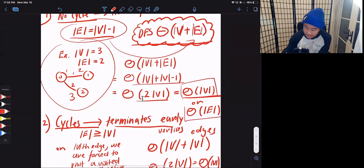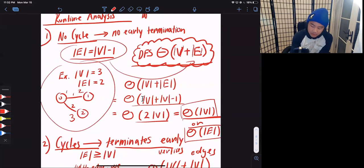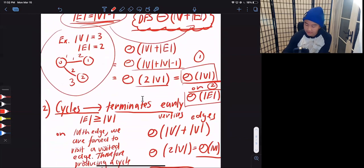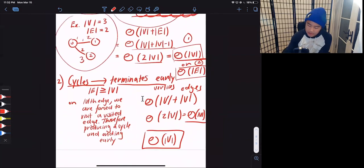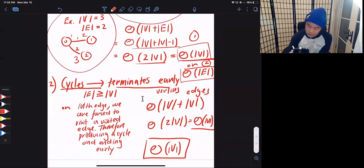It can also be theta E, if we just change this equality around. And so we now have two possible solutions, theta V and theta E. And so now let's look at our second case. So in this case, where the cycles do terminate early, in order for there to be a cycle, there has to be at least as many edges as vertices. Which gives us this equality right here.